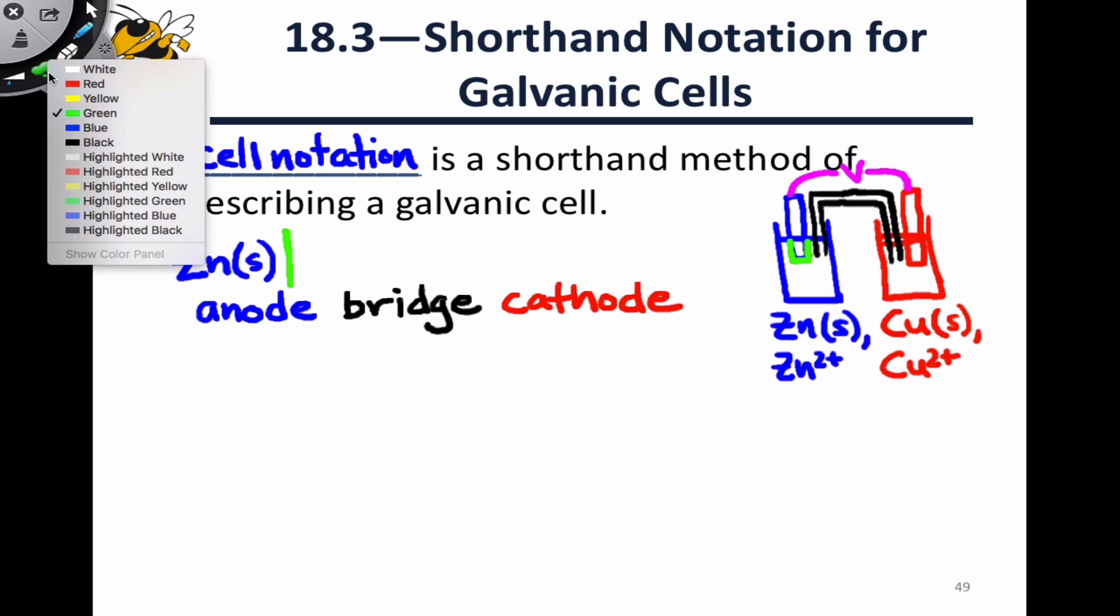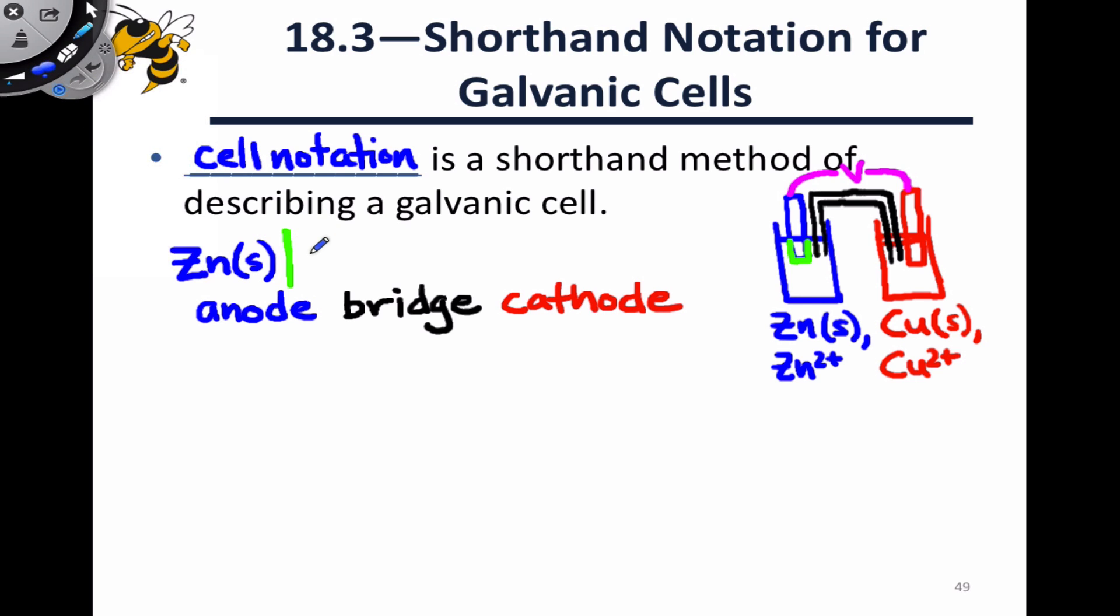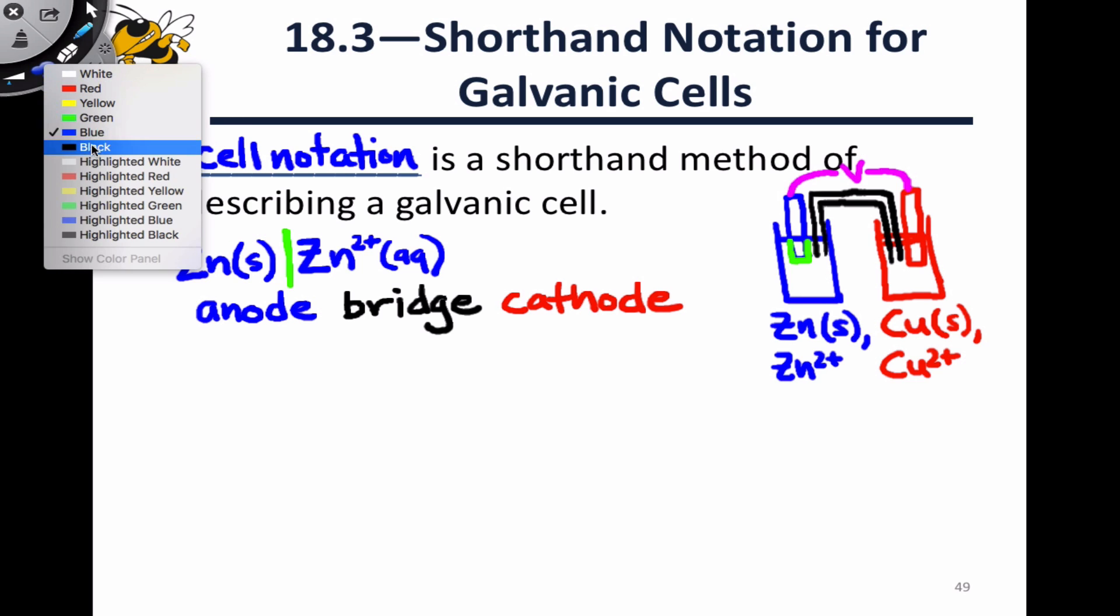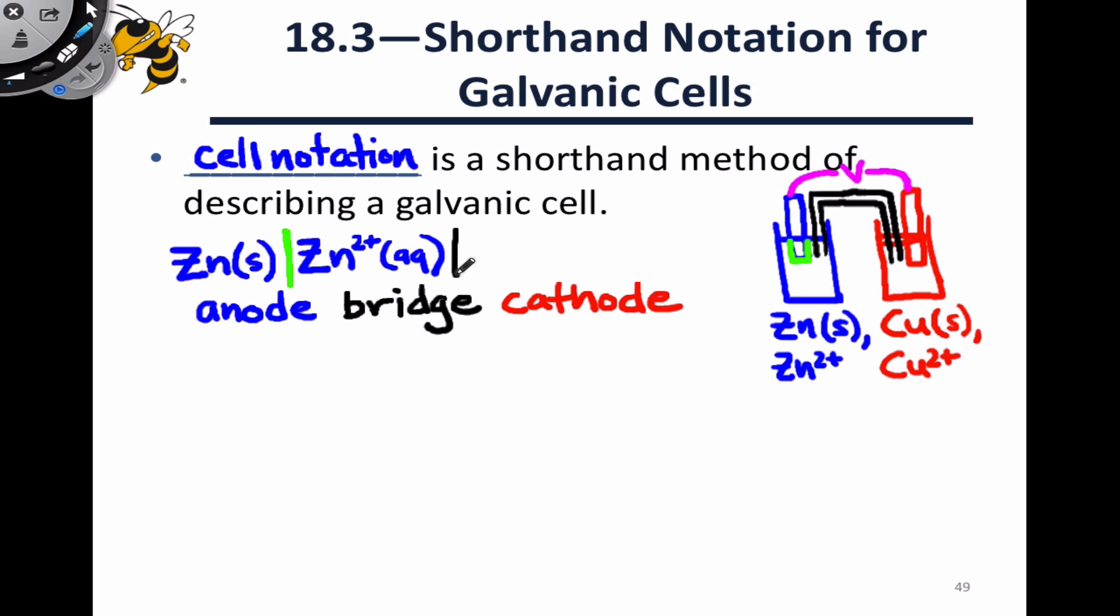To represent the salt bridge, we use two vertical lines like this. And if additional salt is present in the salt bridge, say something like potassium nitrate KNO3, we generally don't represent that in the cell notation since it's irrelevant to the thermodynamics of the cell.